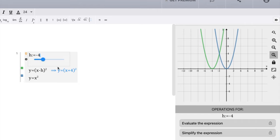Now, notice again, a negative four. When h is a negative four, our equation is y equals (x plus four), right? Subtracting a negative is the same as adding a positive, squared. And our graph gets shifted to the left.